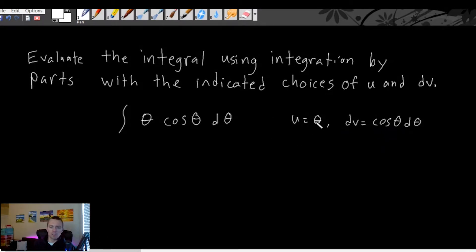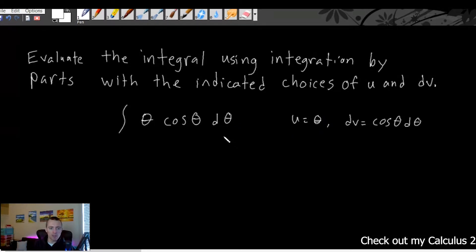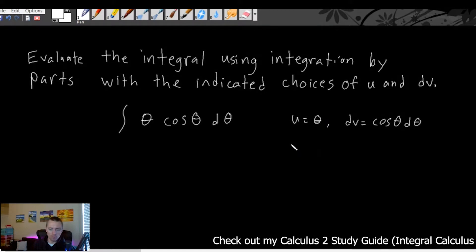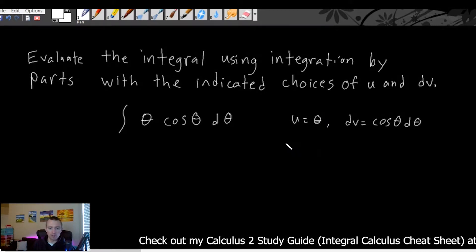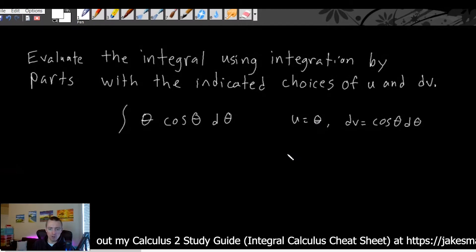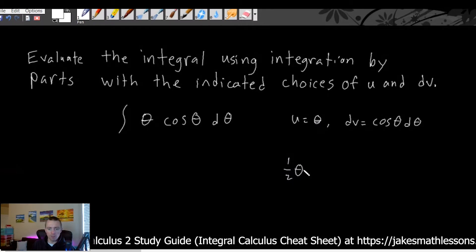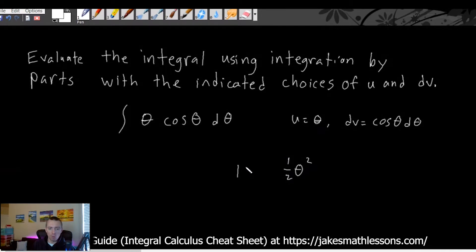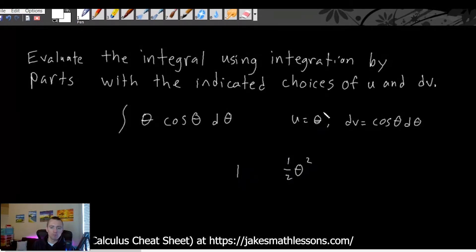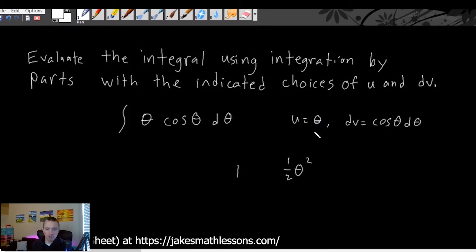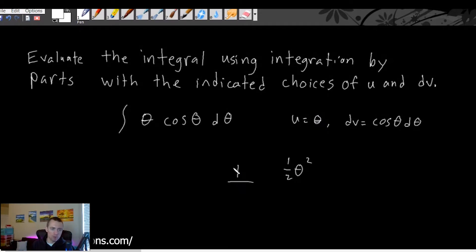This is a good example of that because they told us to use u equals theta. If we think about the derivative versus the antiderivative of theta — since d theta tells us theta is our variable — the derivative of theta with respect to theta is just 1. The antiderivative of theta would be one-half theta squared, so the derivative, being just 1, is much simpler and easier to work with on the next step.